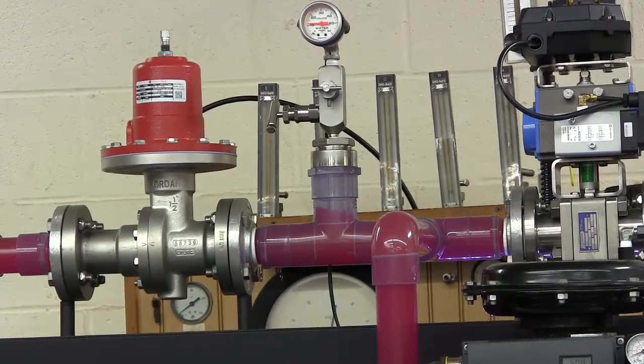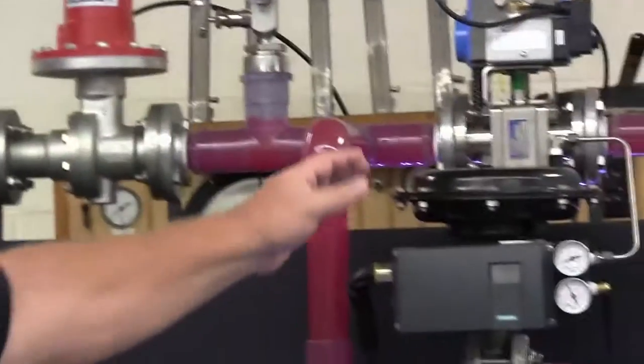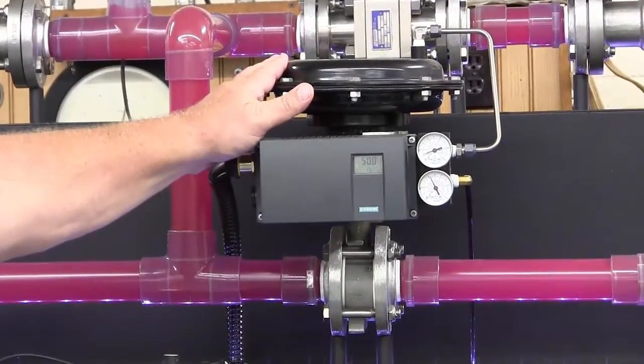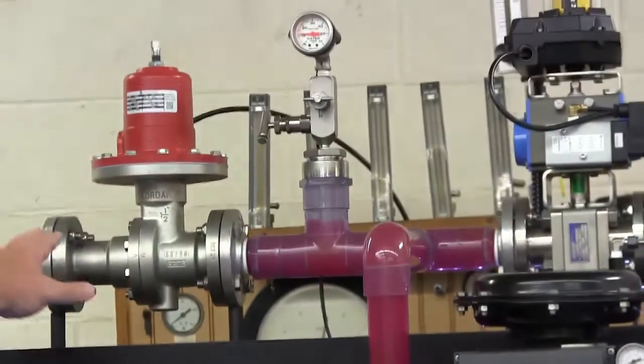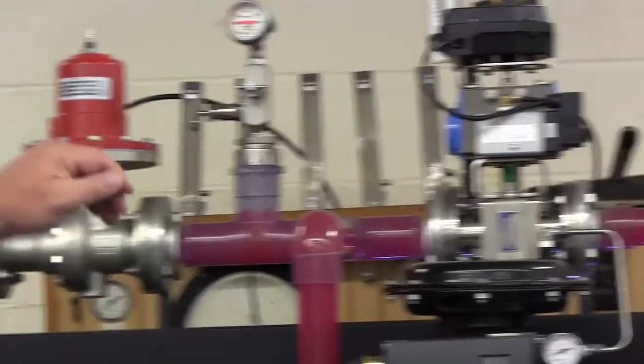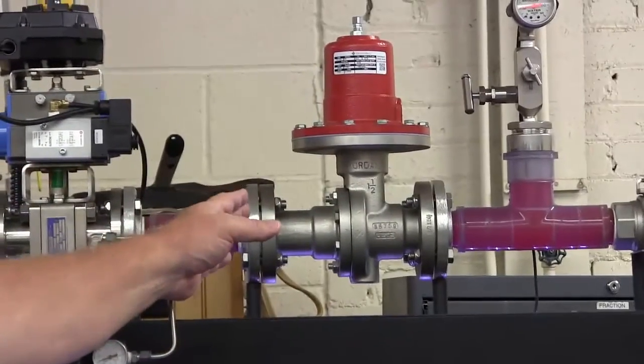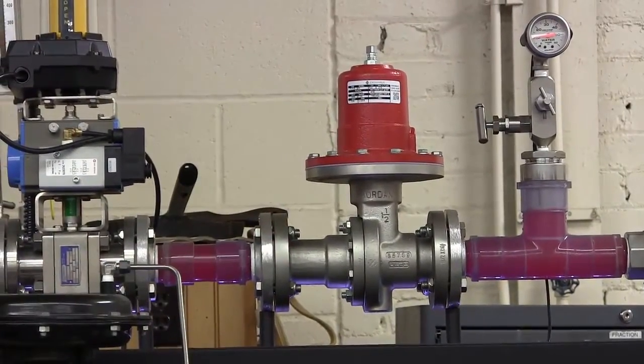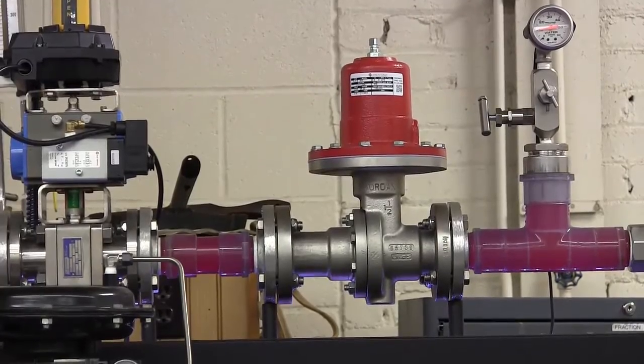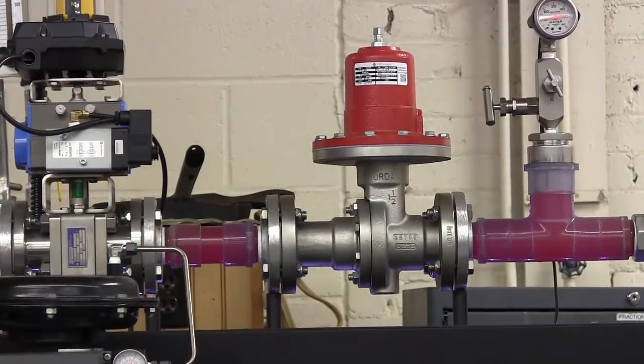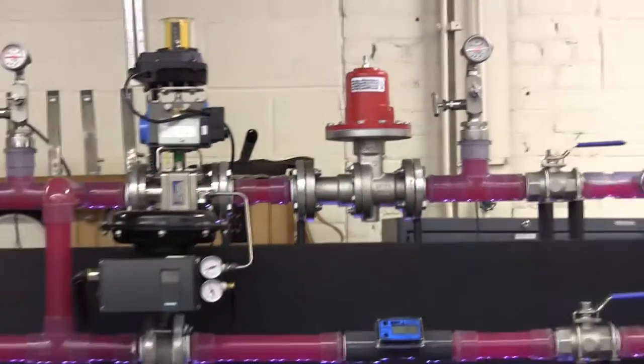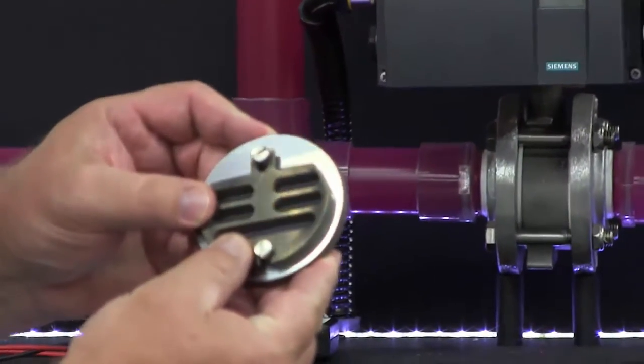The flow bench highlights three of our sliding gate products: the mark 75 wafer style control valve, mark 50 back pressure regulator, and the mark 60 pressure reducing valve. Even though the operation is different in each, all three valves utilize the unique Jordan valve sliding gate seat.